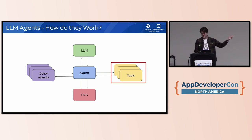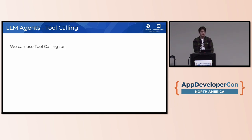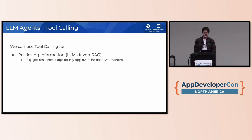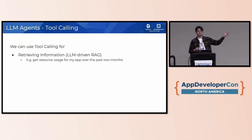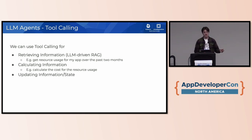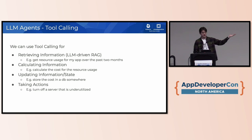Tool calling is really where the magic happens. We can use tool calling to retrieve information — essentially LLM-driven RAG where the LLM decides what information it wants to retrieve after seeing the prompt. We can use it for calculating information, solving compound problems like usage times price. We can use it for updating information state, like storing a price into a database. Or it can take an action, for example turning off a server to save costs.